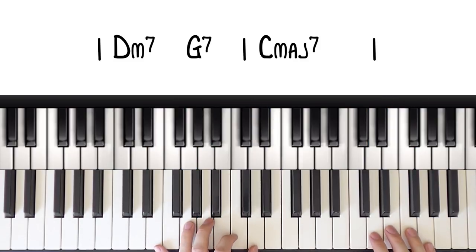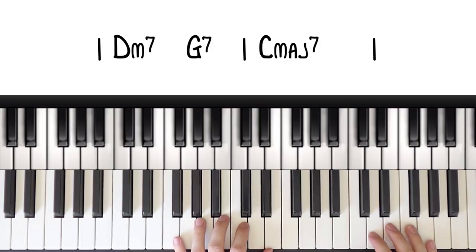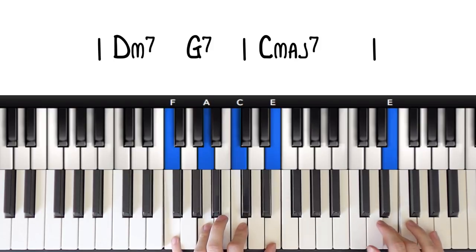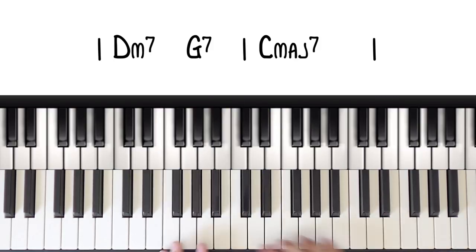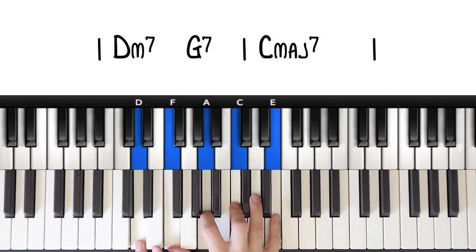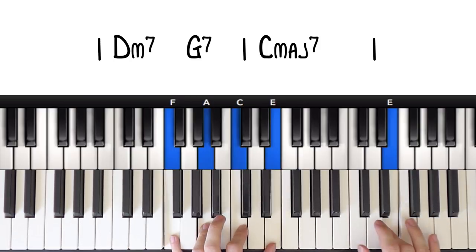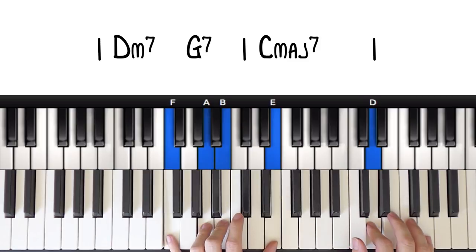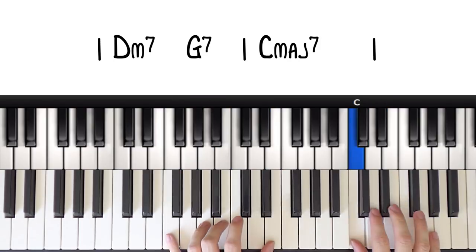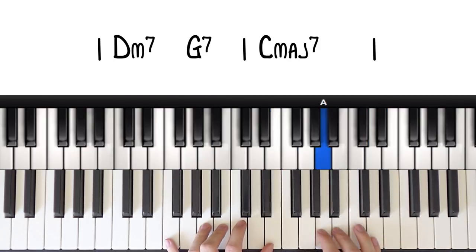So what we're really doing here, it's good to know what's actually happening and the reasons why it sounds good. We are starting on the 9th of the minor 2nd chord. So here's a D minor 9 and we are starting on the E, the 9th. And then we play this and we're landing on the 5th of the G7, 1-2-3-4-5.